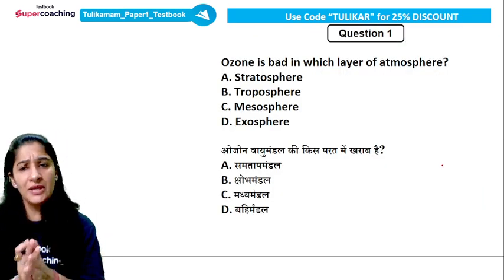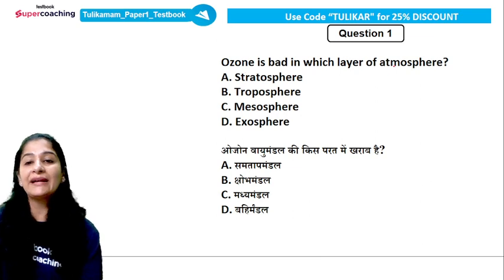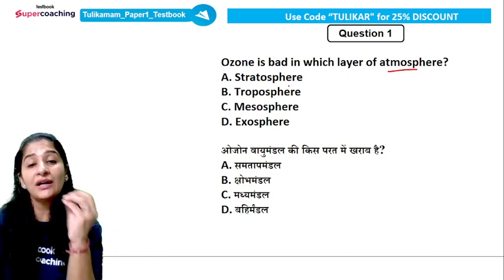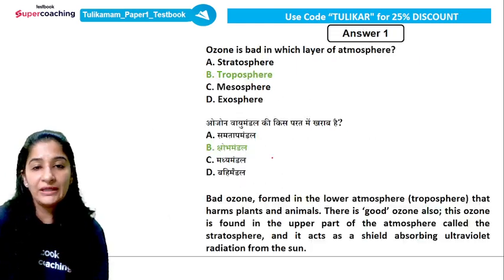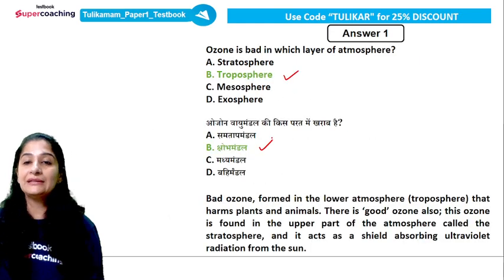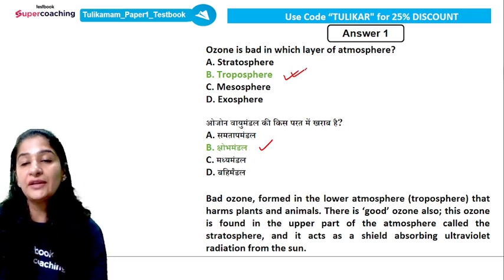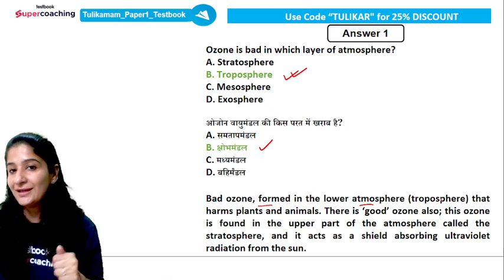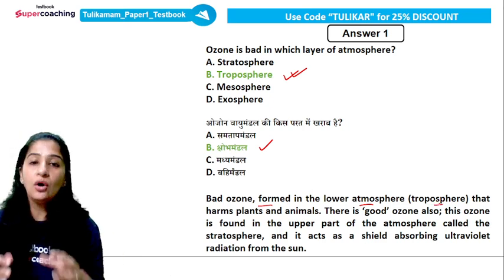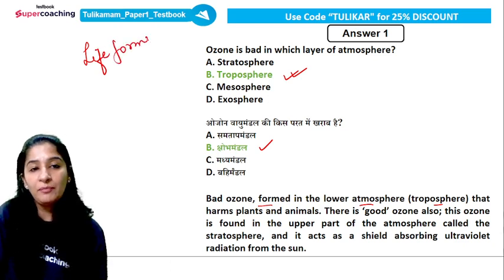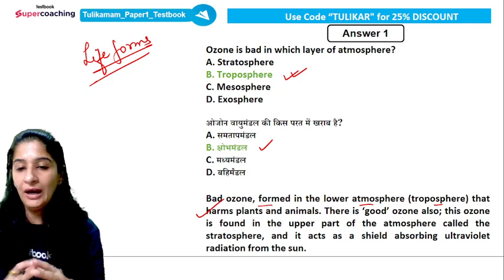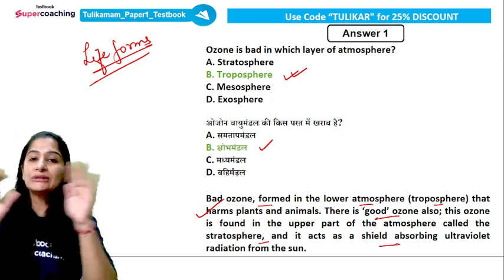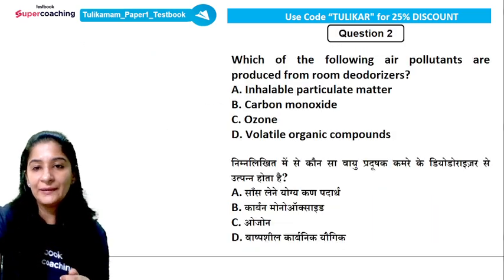Now let's look at a question to see how they are asked: 'Ozone is bad in which layer of the atmosphere?' As we have seen, ozone can be both good and bad, but specifically where is ozone bad? The correct answer is — in the troposphere. Another related concept: ozone is created in the troposphere but is naturally present in the stratosphere. Bad ozone is formed in the lower atmosphere — the troposphere — and it primarily harms all life forms, whether plants or animals. Good ozone found in the stratosphere shields us from the sun's harmful rays.